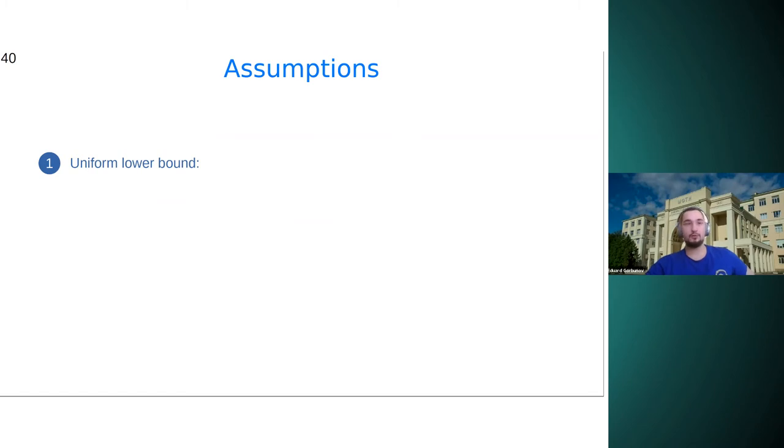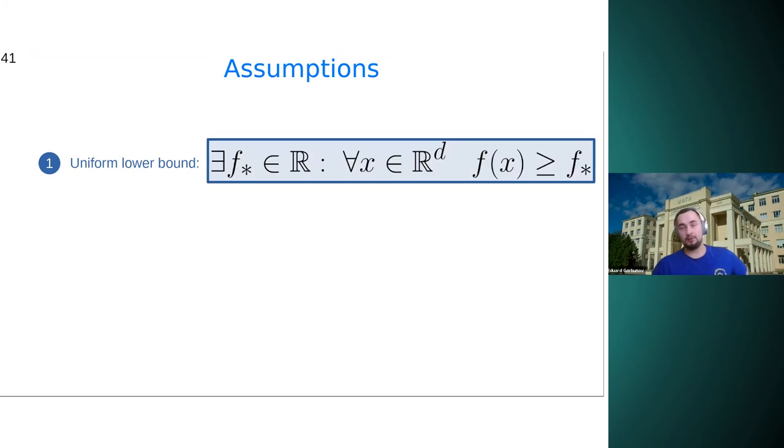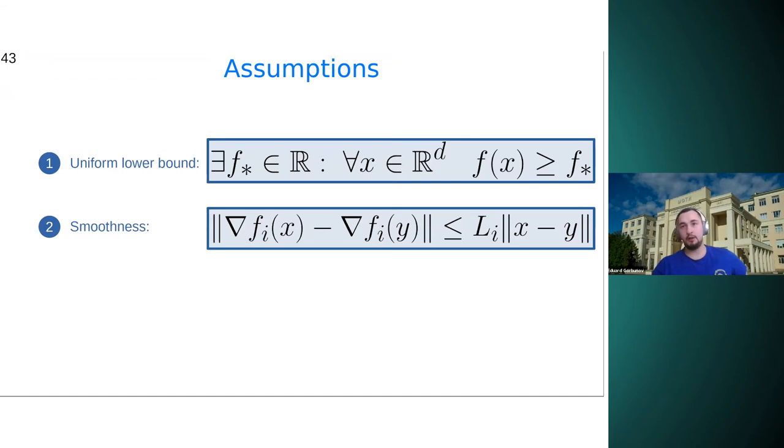We can guarantee that we find some approximation of the stationary point. So now I would like to show you the complexity bound for finding epsilon stationary points. So, before that, I need to introduce two assumptions. The first one is that the objective function is uniformly lower bounded. And this is natural because otherwise the initial problem does not make sense. And we also need to introduce smoothness of the objective. And we actually assume smoothness of each individual local loss function.